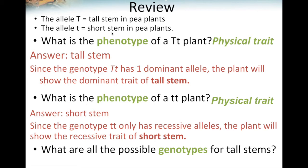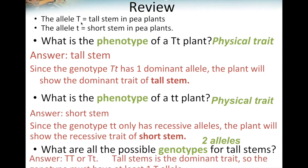The third question asks for genotypes — the combination of two alleles, one from each parent. To represent tall stems, you have to have at least one dominant or capital letter. There are two possible genotypes: you could have a homozygous dominant genotype, meaning two capital Ts, or a heterozygous genotype with one capital and one lowercase. All the genotype needs is one capital letter, and it represents tall stem.